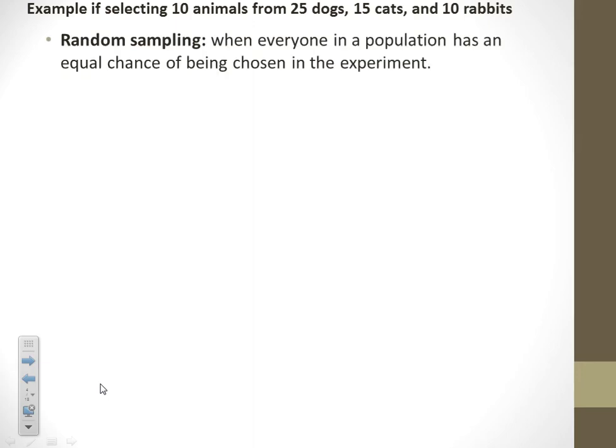Random sampling: we would just randomly choose 10 animals from all 50. So who knows? We could get all 25 dogs. Wait, we only want 10. Never mind. We could get 10 dogs or we could get all 10 rabbits and we wouldn't have any of the others if we just did a random sample.